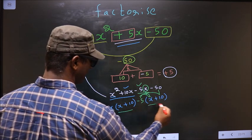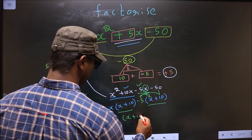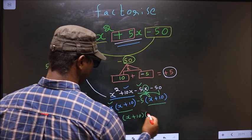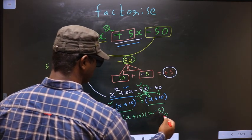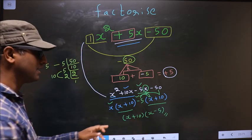Now you take out x + 10 common. So here you have x and here you have -5. This is our answer.